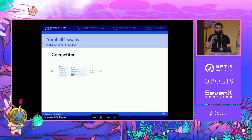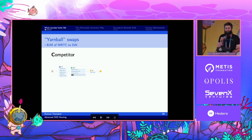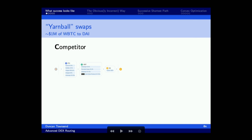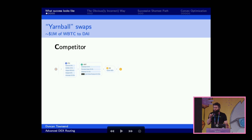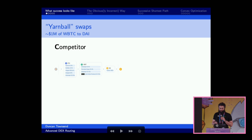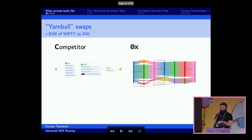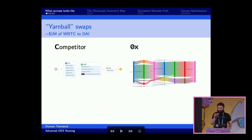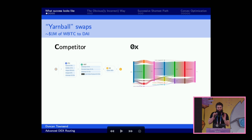How can you, as a trader, know that your DEX aggregation router is giving you the best possible price? This swap for a million wrapped BTC to DAI on our competitor's router looks pretty good. Why wrapped BTC to DAI? These are big tokens with big market caps and lots of liquidity, but very little direct liquidity between these two tokens — that makes it an interesting problem to route. Our competitor's router does a pretty good job, but our router's better. When you see a swap like this, that's how you know the router is giving you the best price. We call this a yarn ball swap. Regardless of whether this is what's displayed, if this is what's happening under the hood, you're getting the best price.